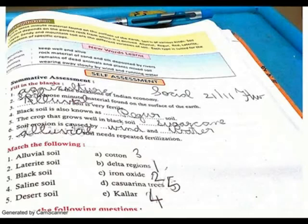Soil of India is a source, fill in the blank. Agriculture is the backbone of Indian economy. Soil is loose minute material found on the surface of the earth.